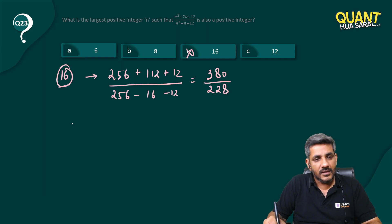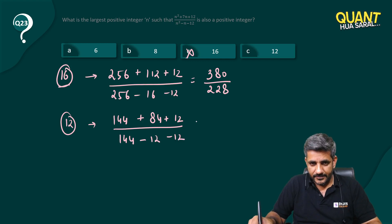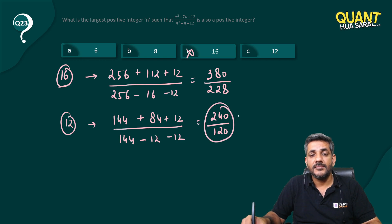C is gone. Let us look at 12 now. 12 square is 144 plus 7 into 12 is 84 plus 12. In the denominator I have 12 square that is 144 minus 12 minus 12. So it is 144 plus 96 is 240, 144 minus 24 is 120. Yes that makes it an integer. My answer is option C.